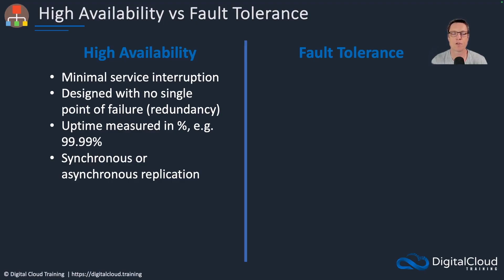With synchronous replication, when one system replicates data to another, it waits for a confirmation to come back to say that the data has been successfully received and written. With asynchronous, there's no wait for that confirmation. So asynchronous is a little bit faster, but it can result in data loss if there's a failure during that timeframe.